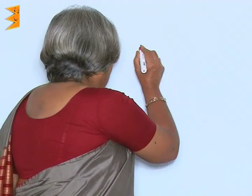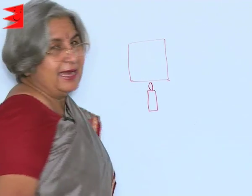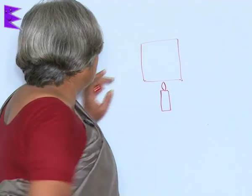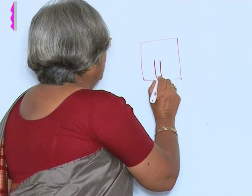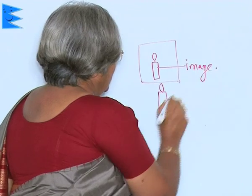For this activity you will need a candle. Whenever you are burning anything or using a candle, it's better to have somebody older with you so you can take precautions. Involve your mom or father on a Saturday or Sunday. Take a mirror and in front of it keep a burning candle. What you will see is that in the mirror you will also see a candle — this is the image, and the real candle is the object.